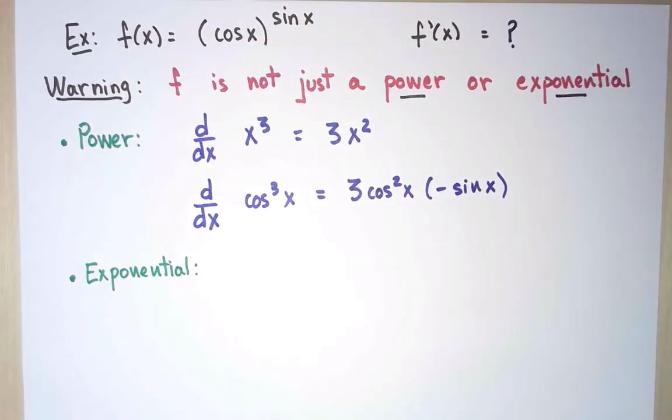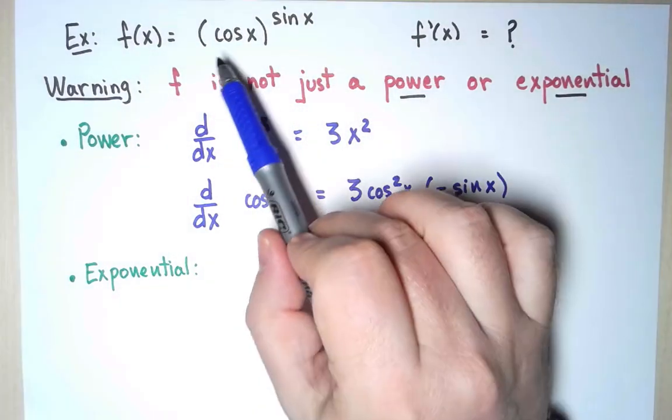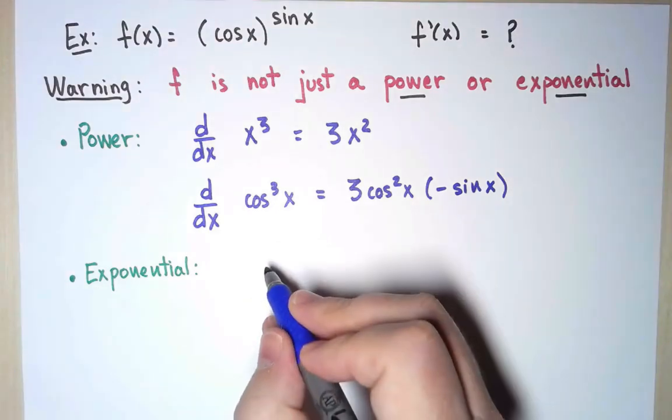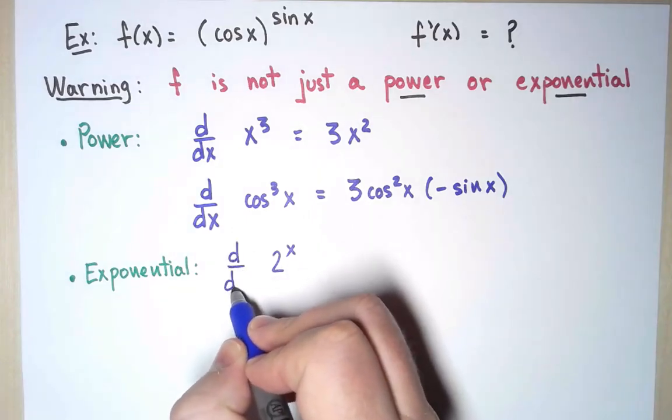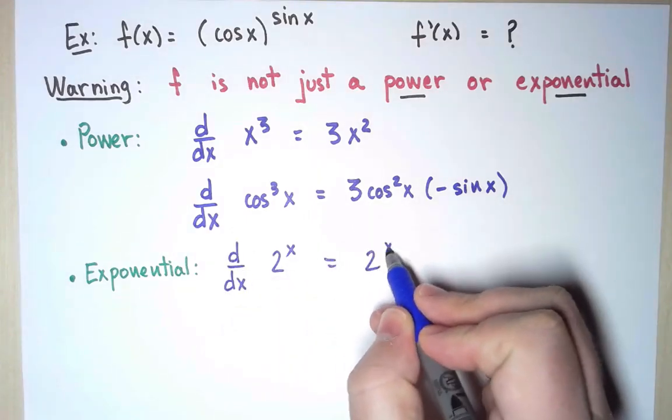On the other hand, an exponential could be a function that depends on x in the exponent, but the base is a constant. For example, 2^x. I have a formula to take derivatives of functions like this. I know the derivative of 2^x is 2^x times ln 2.